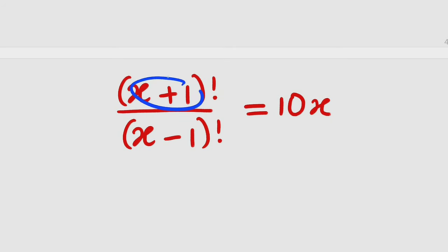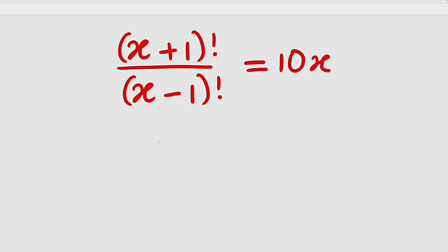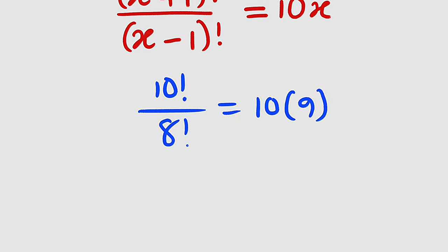If x is 9, we have 9+1 which is 10. So we have 10! divided by 9-1 is 8, so 8!. This is equal to 10 multiplied by 9 which is 90.